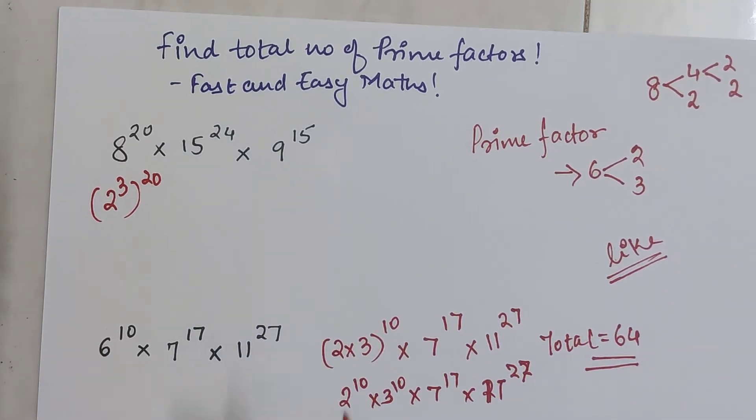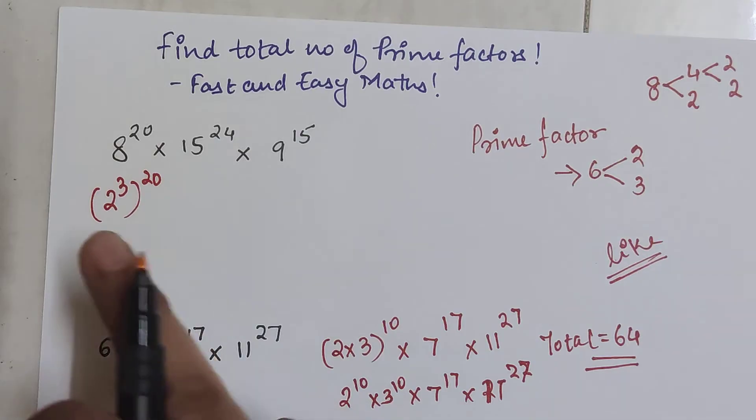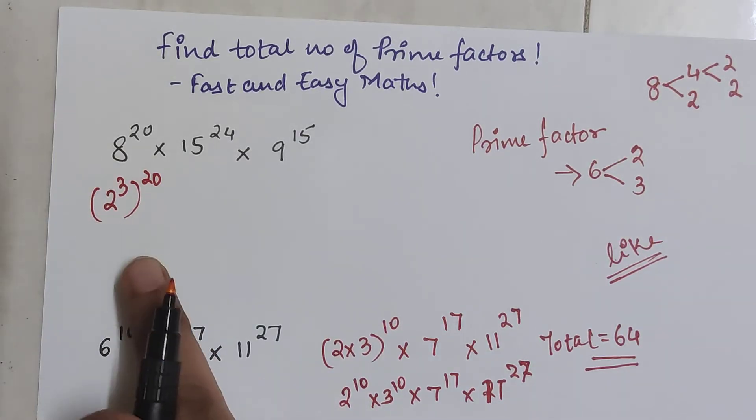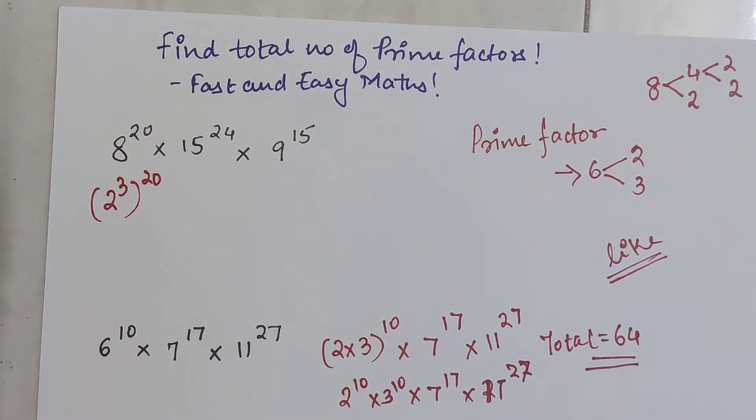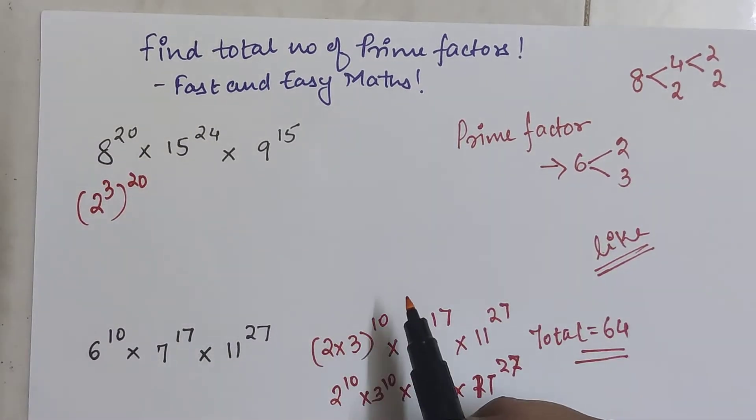Had you taken 8 as 4 into 2, then this would have become 2 into 4 the whole raised to 20, and that would lead to getting the wrong total of number of prime numbers.